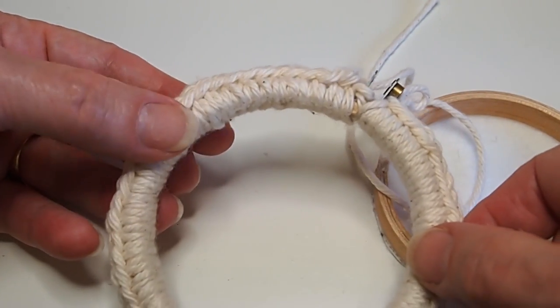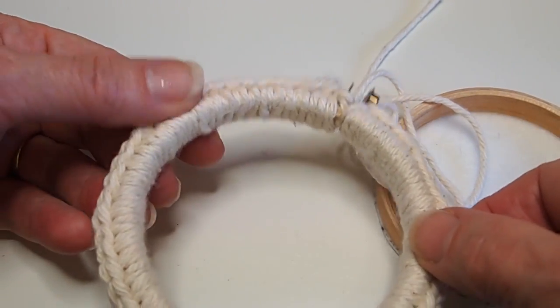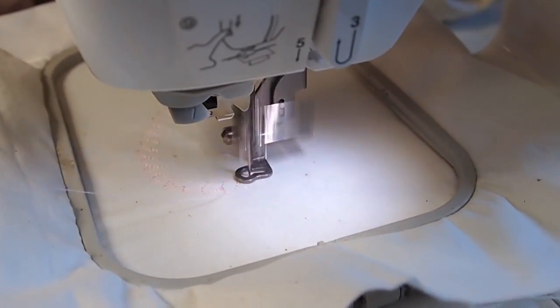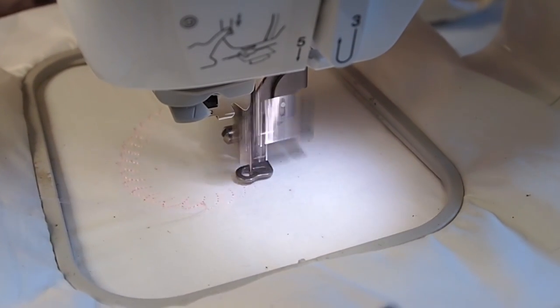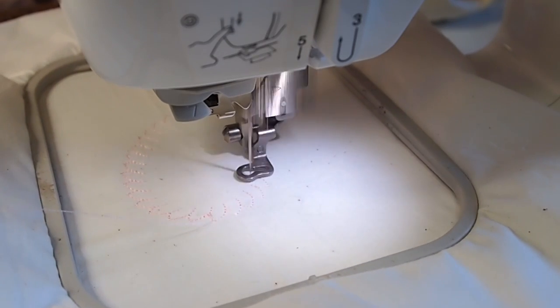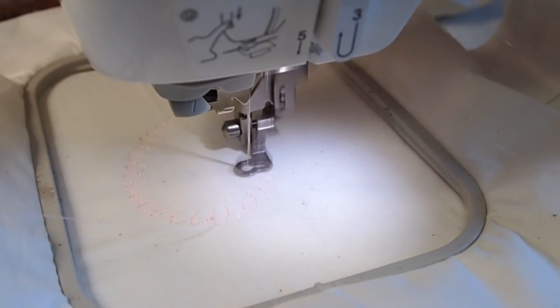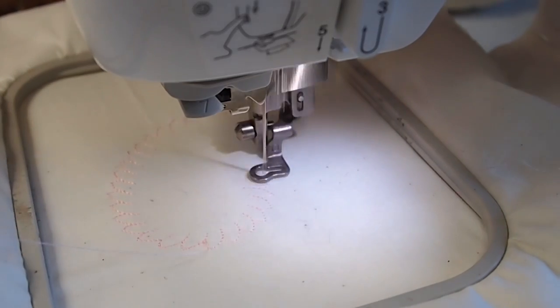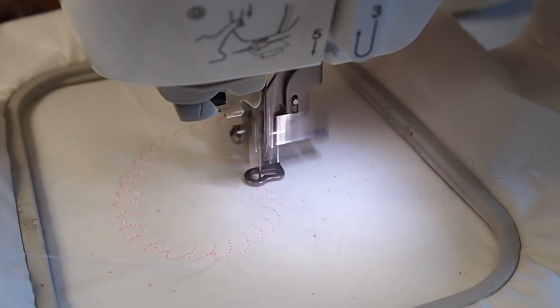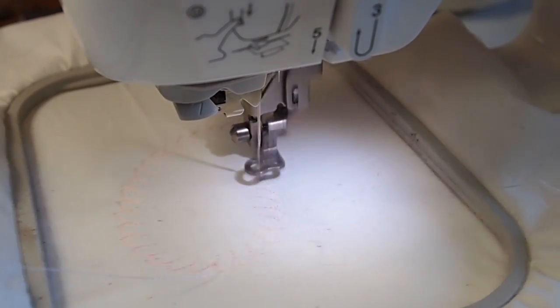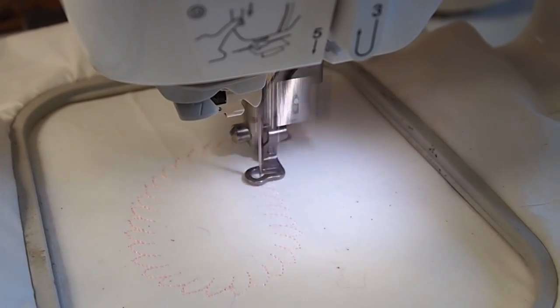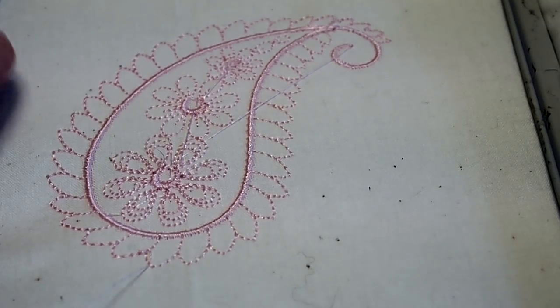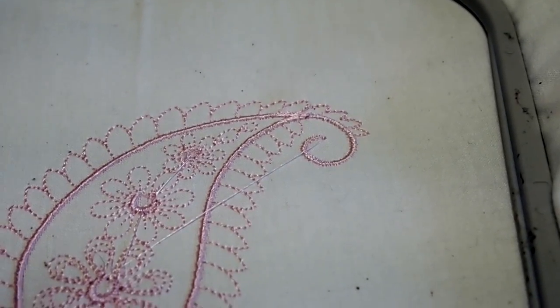The next thing we're going to do is stitch out our embroidery design. I have chosen a paisley design and used Embrilliance embroidery software to size it to my little round hoop for my pin cushion. I used a tear-away stabilizer with a temporary spray adhesive.